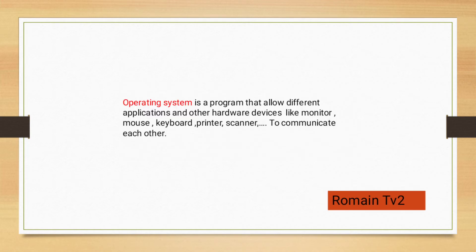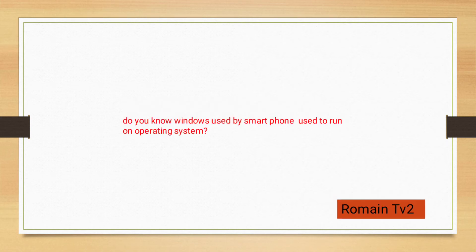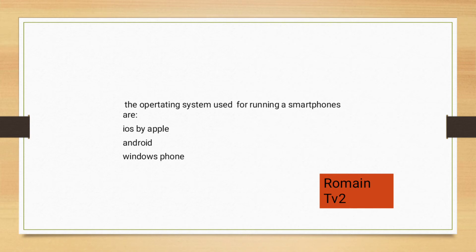An operating system is a program that allows different applications and hardware devices like monitor, mouse, keyboard, and scanner to communicate with each other. Do you know smartphones use different operating systems? For example, iOS is created by Apple company, and there is also Android and Windows Phone.